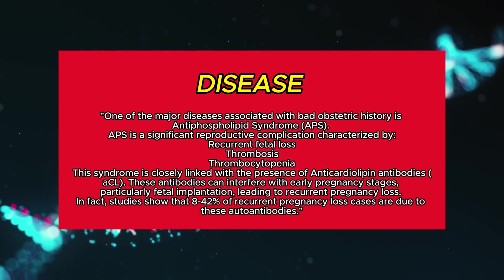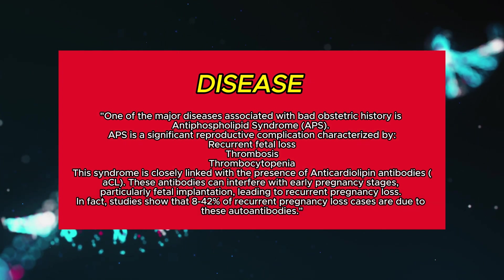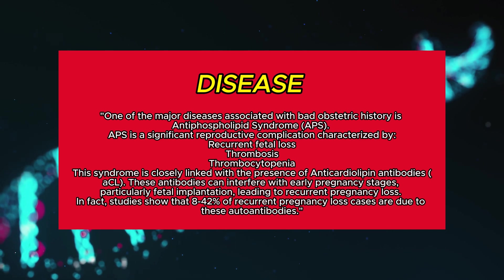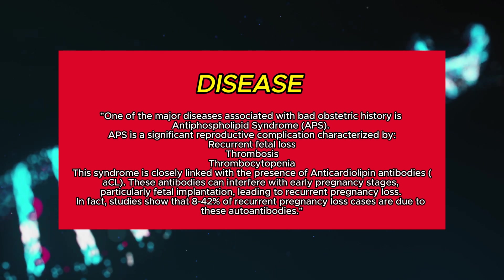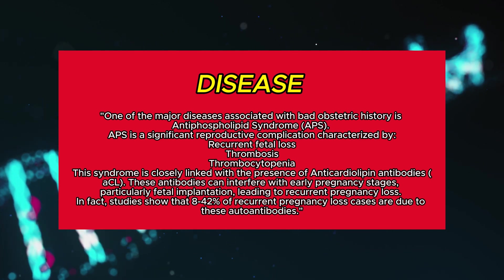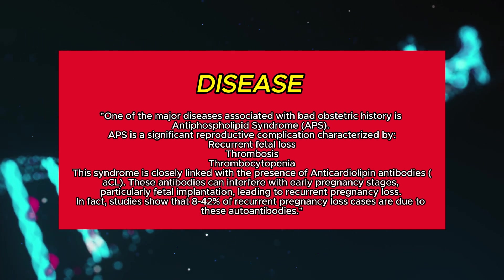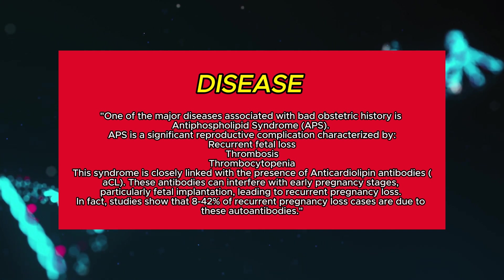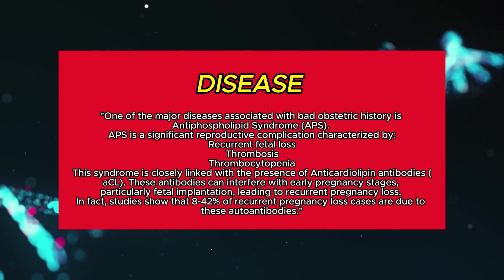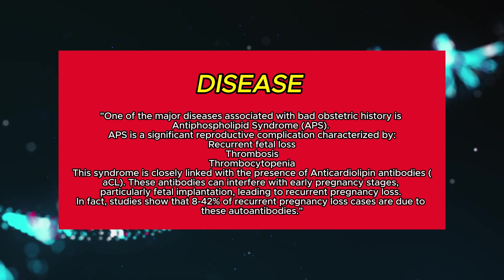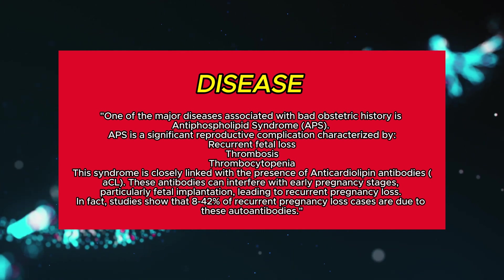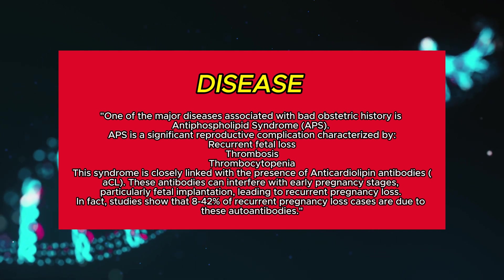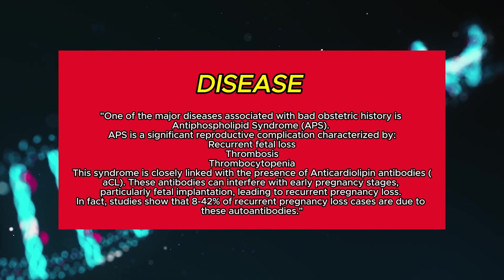Disease associated. One of the major diseases associated with bad obstetric history is antiphospholipid syndrome. APS is a significant reproductive complication characterized by recurrent fetal loss, thrombosis, and thrombocytopenia. This syndrome is closely linked with the presence of anticardiolipin antibodies.